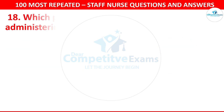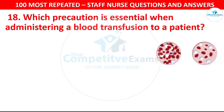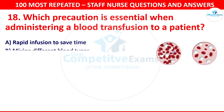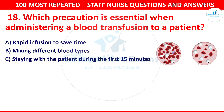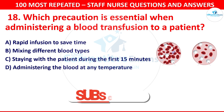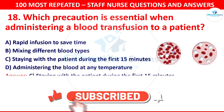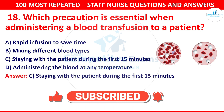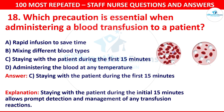Question 18. Which precaution is essential when administering a blood transfusion to a patient? Your options are rapid infusion to save time, mixing different blood types, staying with the patient during the first 15 minutes or administering the blood at any temperature. The correct answer is staying with the patient during the first 15 minutes. This allows prompt detection and management of any transfusion reactions.